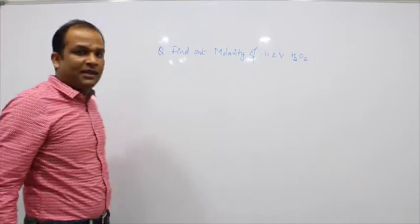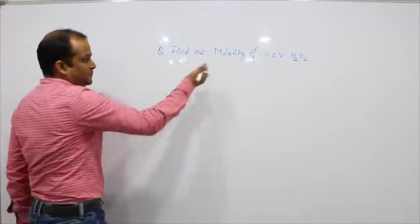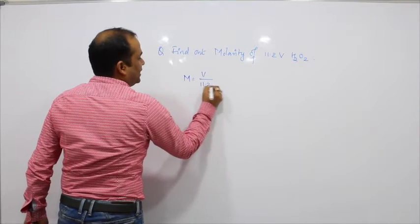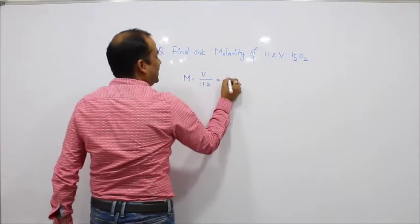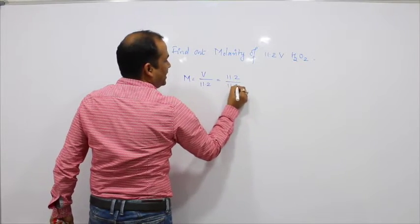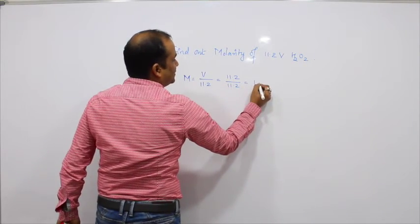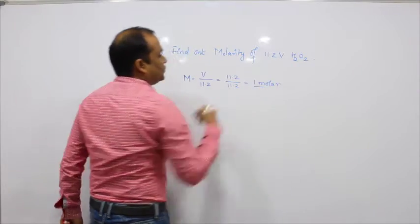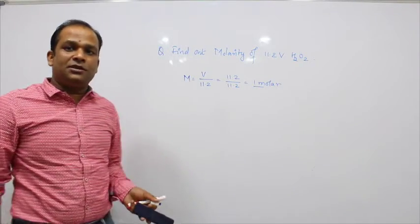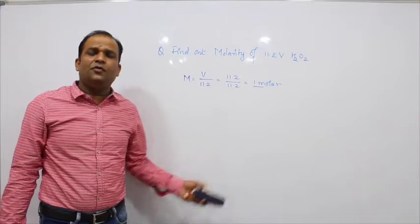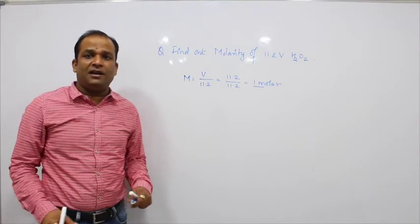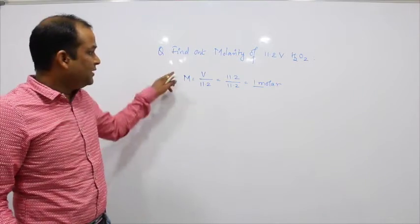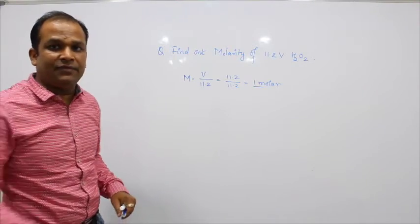Simply apply the formula. Molarity equals V divided by 11.2. If V given is 11.2, then 11.2/11.2 = 1, so the molarity is 1 mol/L. This is how we find the molarity and normality of an H2O2 hydrogen peroxide solution when the volume strength is given.